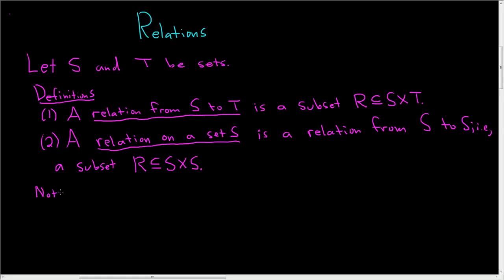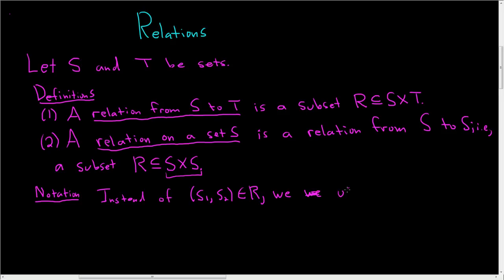Let's talk about the notation we use. Since R is a subset of the Cartesian product, normally we would write the ordered pair (s1, s2) in R. But instead we write s1 R s2, meaning s1 is related to s2. This is just much easier to think about and makes a lot more sense.